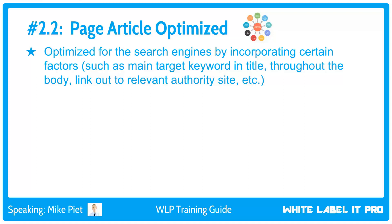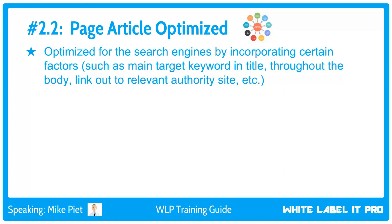The second step in on-page optimization is page article optimization. Not only must we have a compelling page article for humans, it also must be optimized for search engines by incorporating certain factors — such as the main target keyword in the title, the keyword throughout the body, linking out to a relevant authority site, etc. The reason is that Google wants to rank the most relevant searches so the user finds exactly what they want, comes back, has a good experience, and Google makes money.